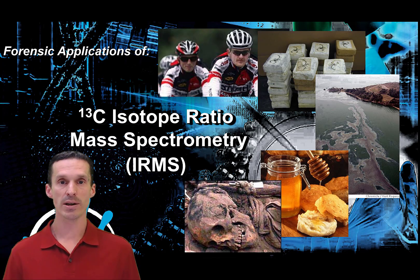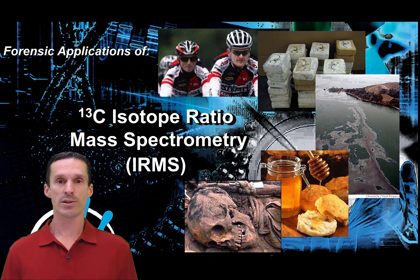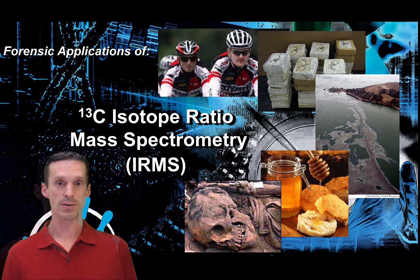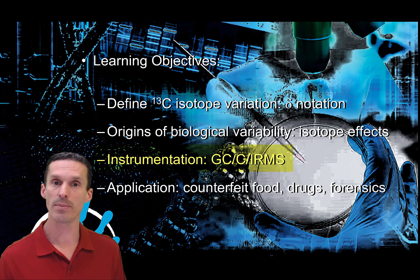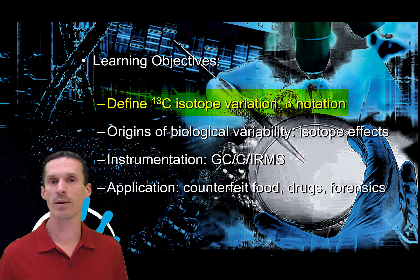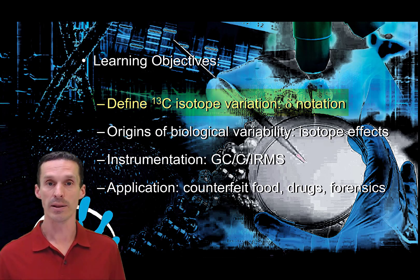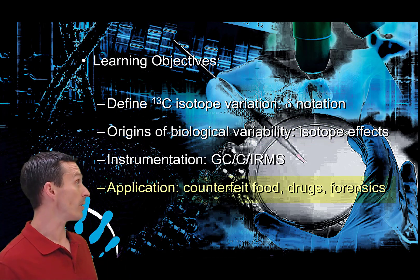We already know that we can get extra information from the isotopic abundance of a mass spectrum, but this topic goes even beyond that. I'm going to tell you a bit of a story because I wasn't even aware this thing existed — it's pretty cool. We're talking about C13 carbon isotope ratio mass spectrometry. I'll show you some applications dealing with forensics analysis, the instrumentation used, the C13 delta notation, the origins of why the abundance varies, and the applications.